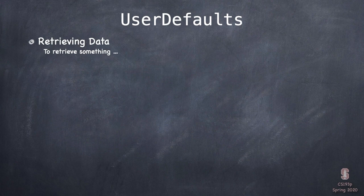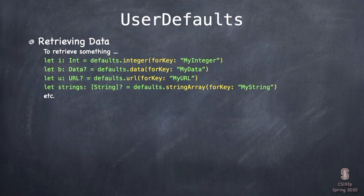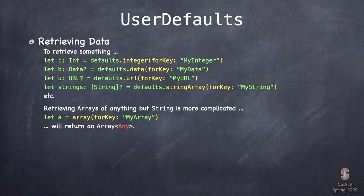To get data back out, there are functions like `integer(forKey:)`, `data(forKey:)`, `url(forKey:)`, even `stringArray(forKey:)`. They'll look in UserDefaults at that key, see what was stored there, and if it's able to make it into the type you want, like a URL or a string array, it will return it. If not, it returns nil. This is great if it's one of those basic types.